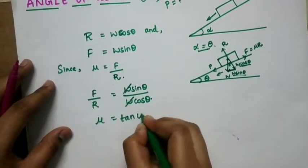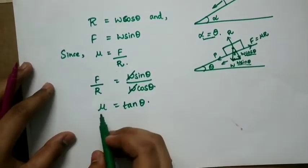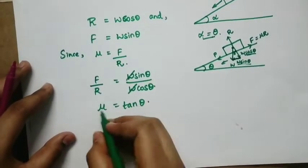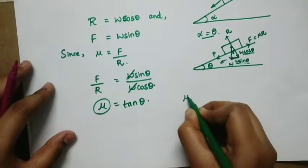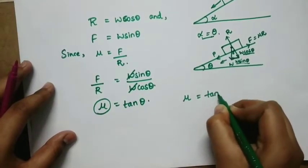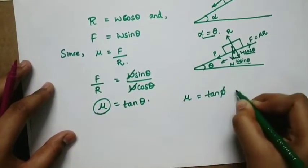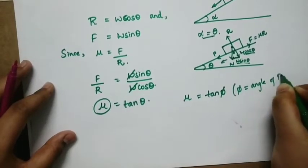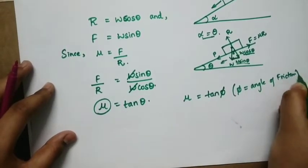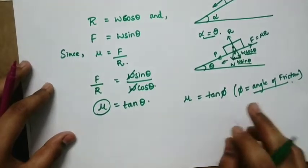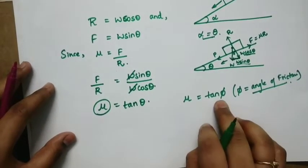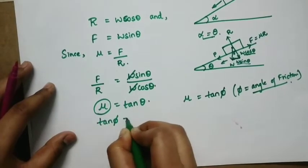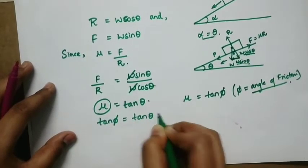Here W gets cancelled, so mu is equal to tan theta. We also know mu is equal to tan phi, where phi is the angle of friction. So tan phi equals tan theta.